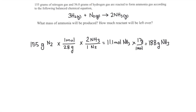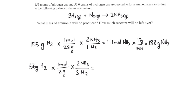Now we do the same calculation using the 56 grams of hydrogen gas. 56 grams divided by the molar mass of H₂, which is 2 grams per mole, times the mole ratio of 2 over 3, gives us 18.7 moles of ammonia. We multiply this by the molar mass of ammonia to give us 317 grams.